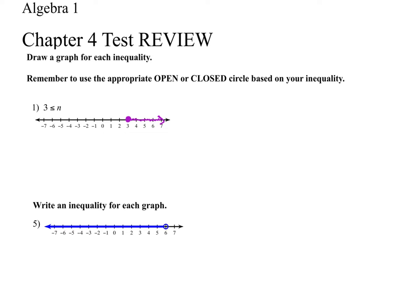The same thing is true here. Everybody knows we're going to start at six. My variable compared to my six — my variable here is smaller than my six. And because it was an open circle, you don't want to put that extra line there. So this would be x is less than six.